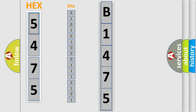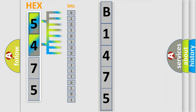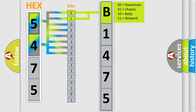The error code is split into two bytes consisting of 16 bits. One bit is the basic unit that each computer works with. The bit has two logical states: 0, low level, and 1, high level.